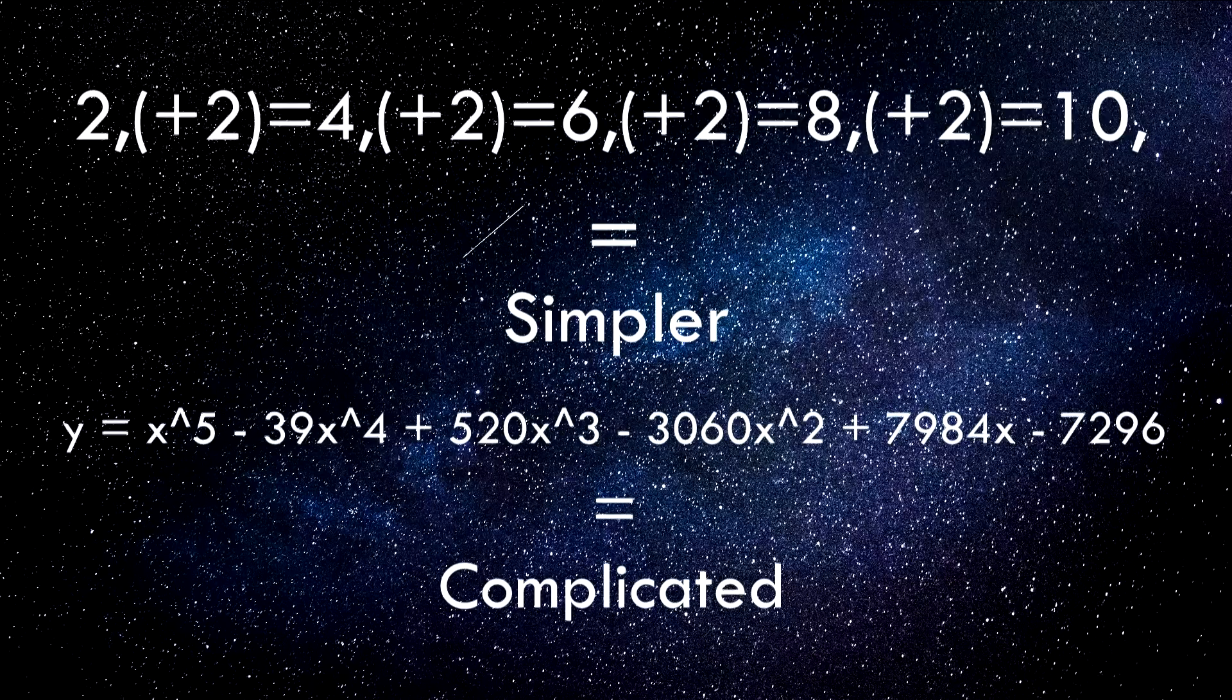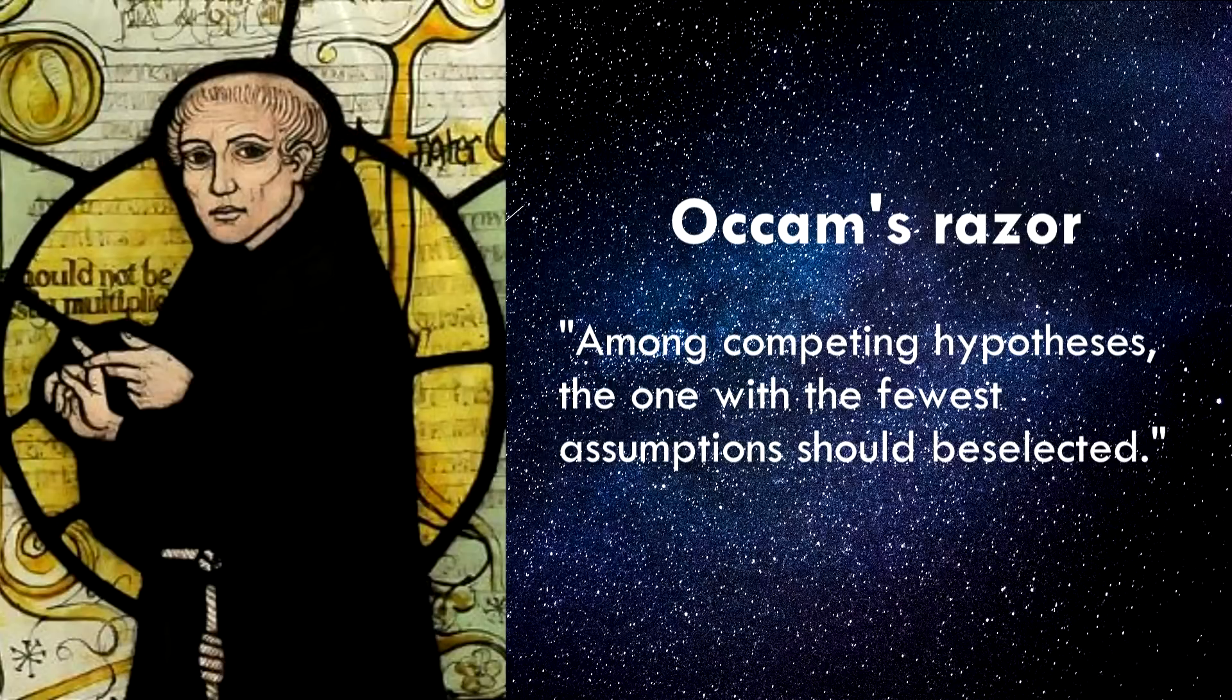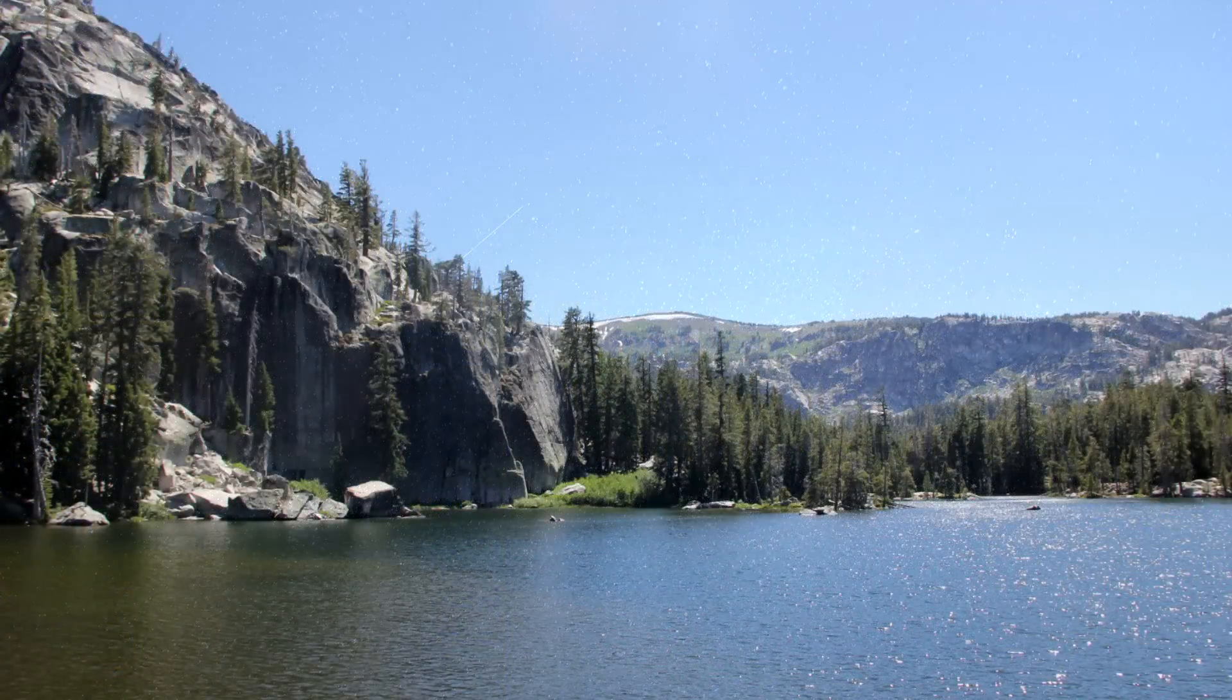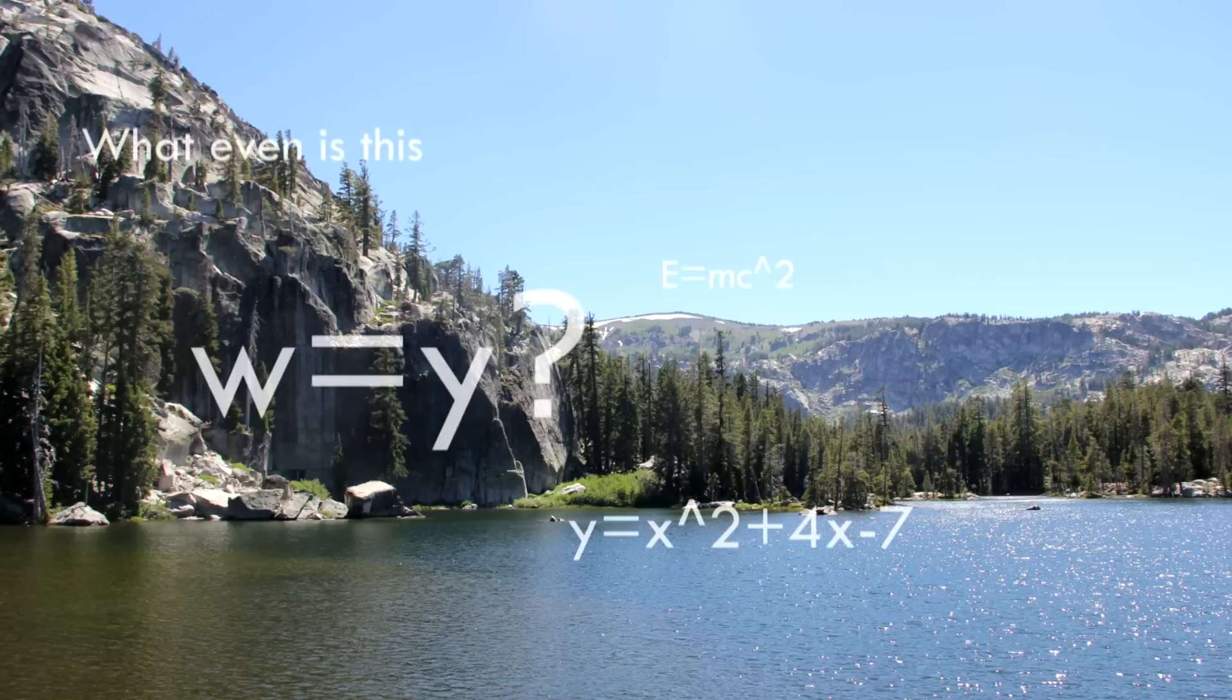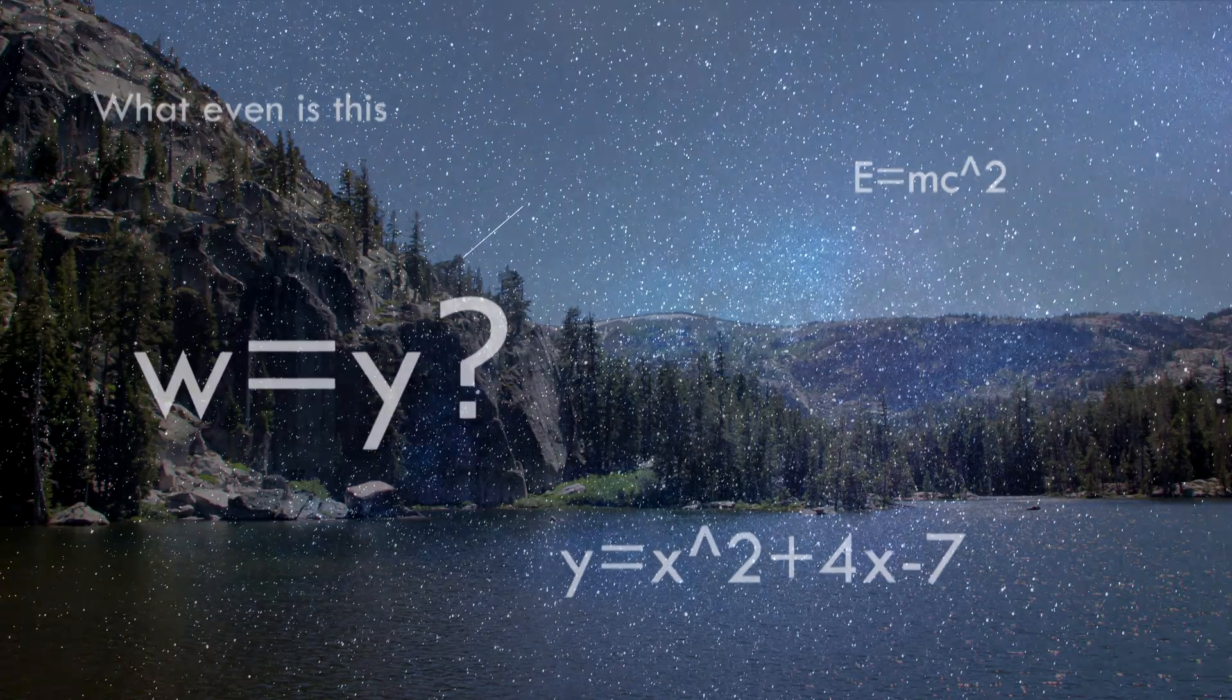This principle is referred to as Occam's razor. The sequence in this video was an analogy for the natural world. Scientists make observations, and then based on their observations, they make guesses to what types of rules the natural world follows.